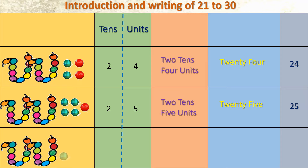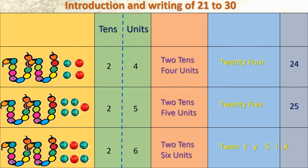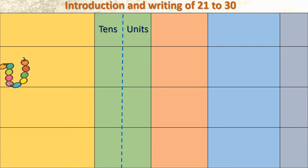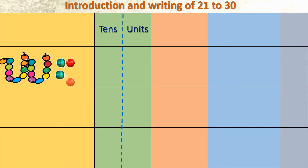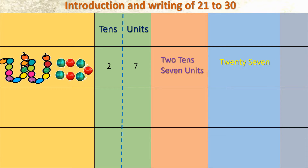Again we are going to add one more bead. How many single beads are there? 6. So two tens and six units — number is 26, and 20 and 6. Next: two tens and seven units, number formed is 27, numerals 20 and 7. I hope you understood how to write the numbers and how to express them in units and tens form.